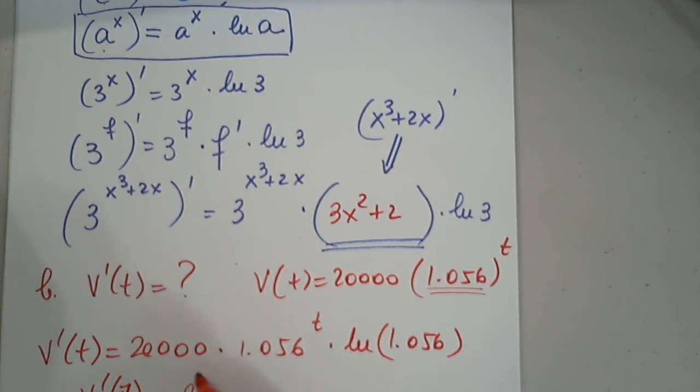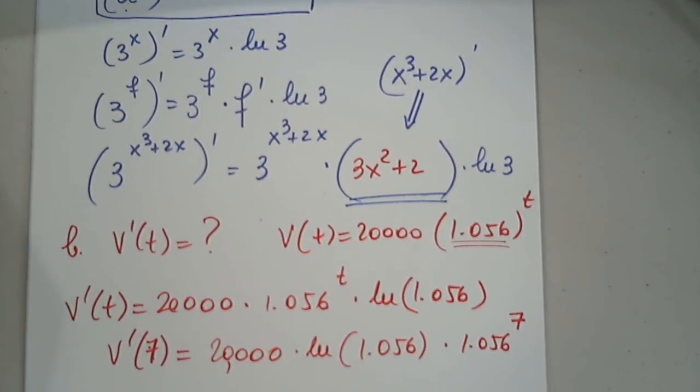So only now I can determine V prime of 7. So I have 20,000 multiplied by this natural log - it's a constant, I'll put it in front - and multiplied by 1.056 raised to the seventh power. So I will put all this in the calculator.